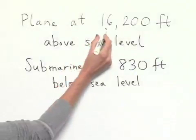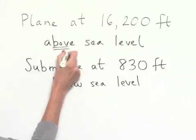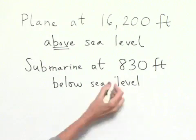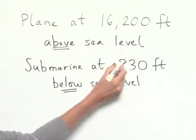So we have our plane, and we're given the value of 16,200 feet above sea level, and then we have a submarine that's 830 feet below sea level. We want the difference between these two values.